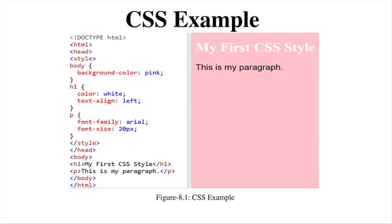Now a CSS example. We start with the doctype HTML declaration, then the HTML tag, head tag, and style tag. Inside style we set body background-color to pink, H1 color to white with text-align left, and paragraph font-family to Arial with font-size 20 pixels. After closing the style and head tags, we have the body containing an H1 heading 'My first CSS style', and a paragraph 'This is my paragraph', then body and HTML tags are closed.